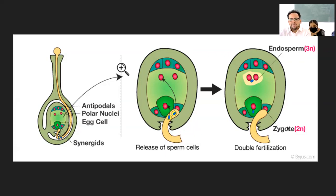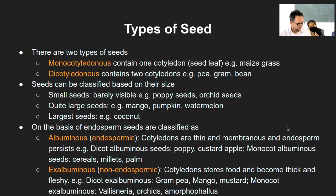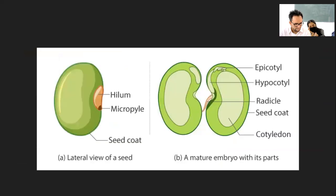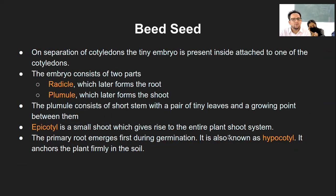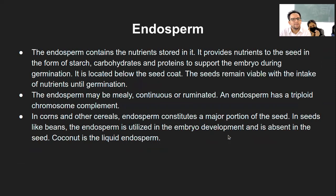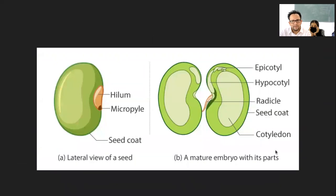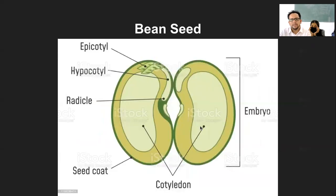Cotyledons will always be there, but in addition to cotyledon there will be another nutritious layer called endosperm — it is around the cotyledon. This cotyledon is ultimately part of that nutrition which is endosperm. In the case of coconut, the liquid you get inside is the liquid endosperm. So that nutritious tissue is that liquid — that is just one additional fact.